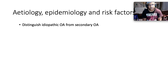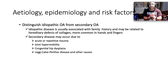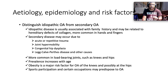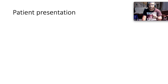It's very important to distinguish idiopathic osteoarthritis from secondary osteoarthritis. Idiopathic disease is usually associated with a family history and may be related to hereditary defects in the structure of collagen, more common in the hands and fingers. Secondary disease often occurs due to acute or repetitive trauma, joint hypomobility, congenital hip dysplasia, or Perthes disease. Primary OA is more common in load-bearing joints such as the knees and hips, and prevalence increases with age. Obesity is a major risk factor, and sports participation in certain occupations may also predispose to OA.